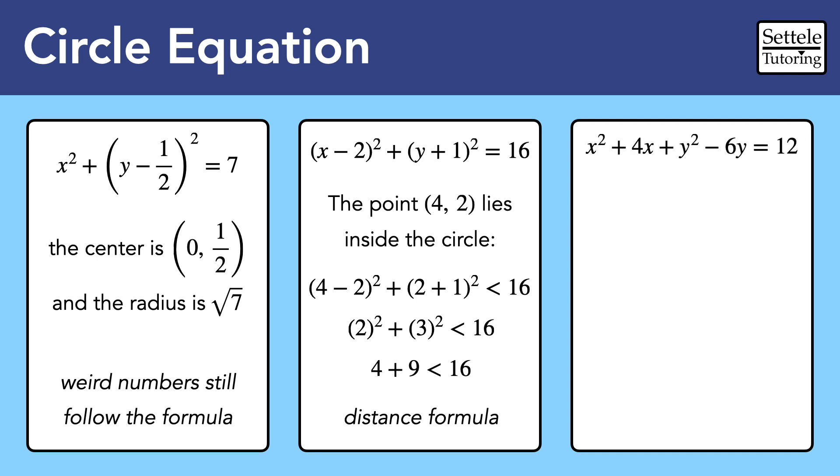Finally, we will sometimes see circles that are not written in the standard equation. In this example, we know that this is a circle because both the x and y are squared, and the SAT does not ask about ellipses or other advanced conic sections. In order to get back to the standard equation, we would need to complete the square twice, once for the x's and once for the y's.